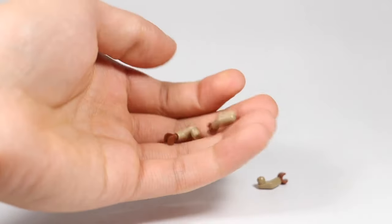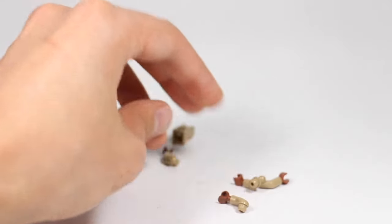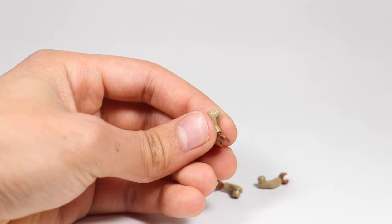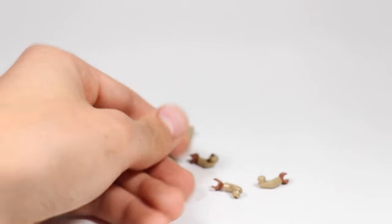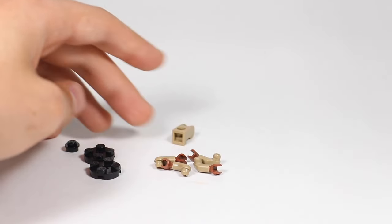Also, you'll need four minifigure arm pieces. For this demonstration I'm using beige, but you can use any other color that would be realistic for turtle legs. And also do make sure that you have the hand pieces connected to the arms.